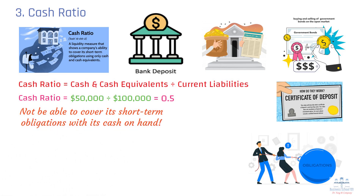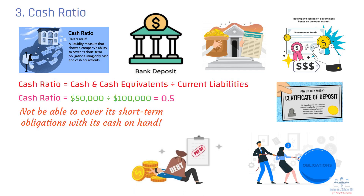The cash ratio measures a company's pure liquidity — its ability to pay debts with cash alone, without relying on inventory or receivables. While a ratio above 1.0 isn't usually necessary, a very low ratio can signal liquidity risks, especially in volatile industries.